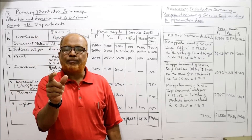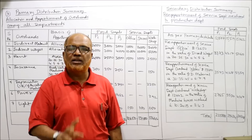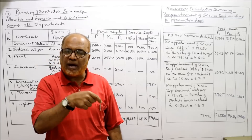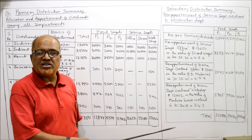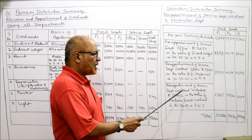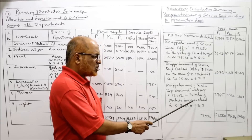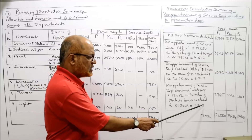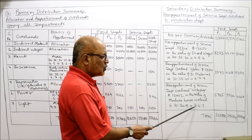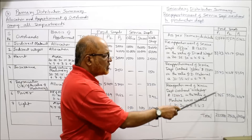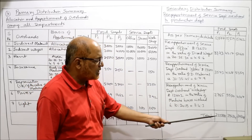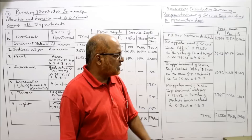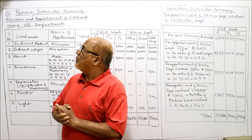Third service department: Workshop with a total of 12,442. Workshop is where machinery is used, so it is reapportioned in the ratio of machine hours worked — 10,000:20,000:15,000, simplified to 2:4:3 (total 9). So 12,442 × 2/9, × 4/9, × 3/9 gives the shares for P1, P2, P3. Final totals after secondary distribution: P1 = 22,588, P2 = 29,434, P3 = 30,328.